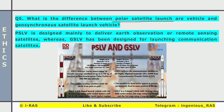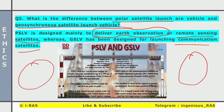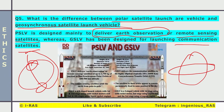What is the difference between polar satellite launch vehicle (PSLV) and geosynchronous satellite launch vehicle (GSLV)? PSLV is designed mainly to deliver earth observation or remote sensing satellites, whereas GSLV is designed for launching communication satellites. Earth-observing satellites are placed in polar orbit — where the satellite circles over the North and South Poles. Communication satellites are placed in geosynchronous orbit, circling around the equator.